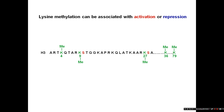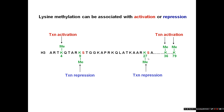Whereas acetylation tends to be an active mark, lysine methylation is more complex and can be associated with either activation or repression depending on which lysine has been modified. On the H3 tail, methylation of lysine 4 is strongly associated with transcription activation and is found at active promoters. However, lysine 9 and lysine 27, when methylated, are related to transcription repression. The key marks to remember are lysine 4, lysine 9, and lysine 27 of histone H3.